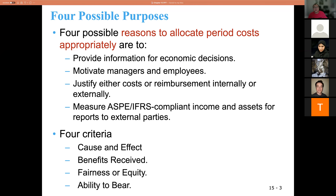For example, in an accounting partnership with two CPA partners sharing a building and admin staff, one way to allocate costs is based on revenue generated — if one generates one million and the other two million, the ratio is one to two. Third, fairness or equity. Fourth, ability to bear — if a unit is a cost center and doesn't generate much revenue, allocating a large cost to them may not be appropriate.